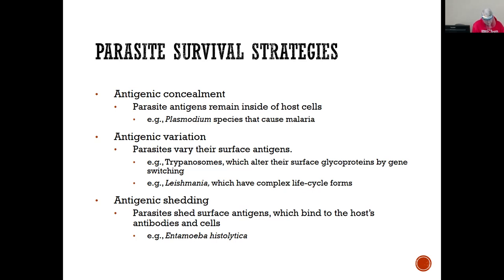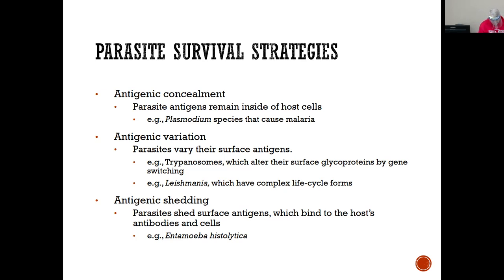The third mechanism is gene switching, the most dramatic form of antigenic variation a parasite can do. They carry upwards of 1,000 different genes and can just switch them around, expressing different ones. The example here is trypanosomes — Trypanosoma gambiense and Trypanosoma rhodesiense — which alter their surface glycoproteins by gene switching, thus evading the immune system.